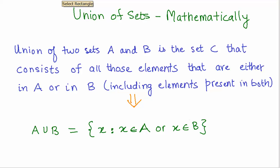If we were to look at the definition of union mathematically, it says: union of two sets A and B is the set C that consists of all those elements that are either in A or in B, including elements present in both.